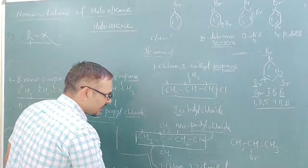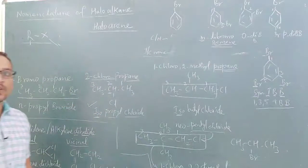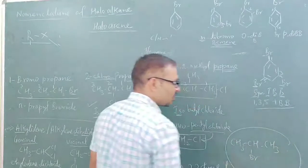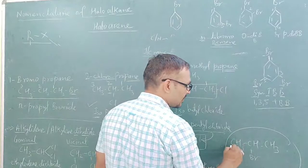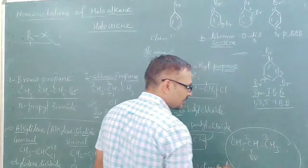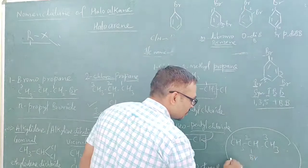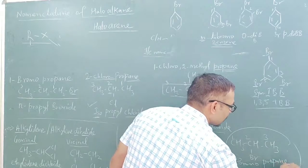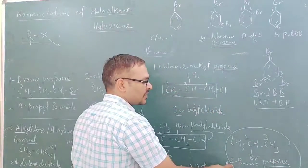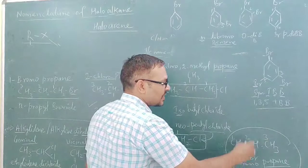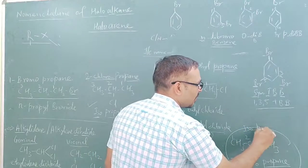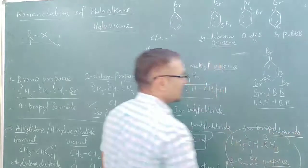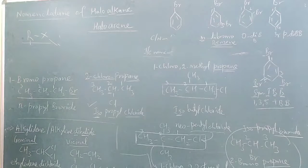This will be its IUPAC name and this is the common name. Similarly, for the next structure: select the long chain. Numbering gives positions 1, 2, 3. It is 2-bromopropane as the IUPAC name. Common name: there is a branch chain, so it is isopropyl bromide. This is the common name.